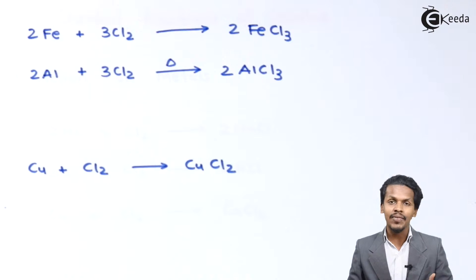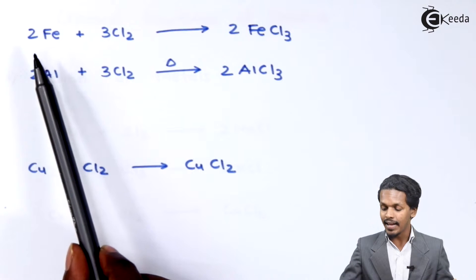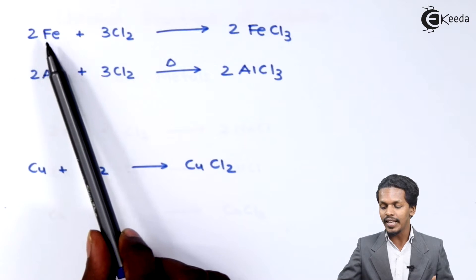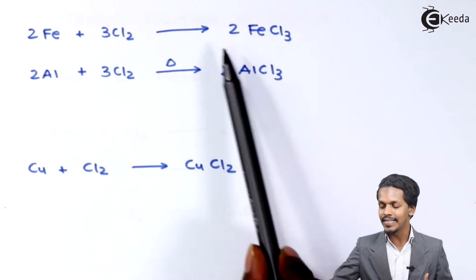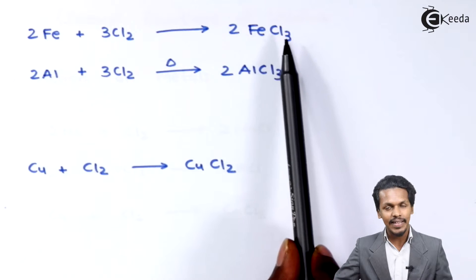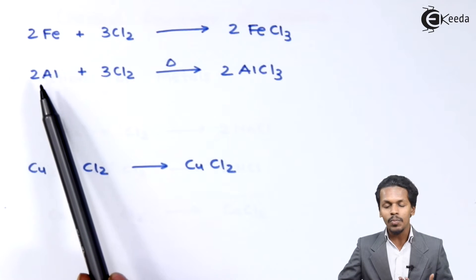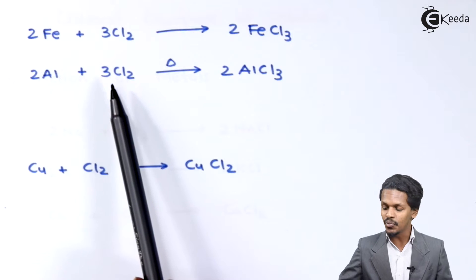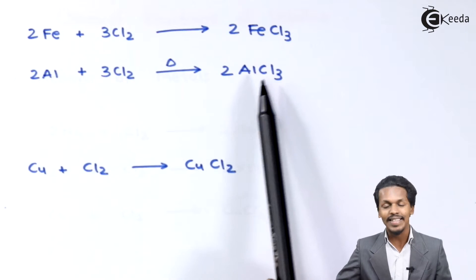Chlorine can also react with elements like iron and aluminum. In that case, 2 moles of Fe reacts with 3 moles of Cl₂ to produce ferric chloride, FeCl₃. Similarly, 2 moles of aluminum reacts with 3 moles of Cl₂ to form aluminum trichloride, AlCl₃.